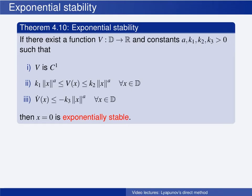Note that I have rewritten theorem 4.10 for time-invariant systems, which is what we consider for the time being, but theorem 4.10 in the book actually holds for time-varying systems, which we will get back to. When using this theorem, you must use the same norm in all three inequalities, and the same power — the same constant a — in all three inequalities. The conditions are stricter than in the Lyapunov theorem for asymptotic stability, which makes sense since exponential stability implies asymptotic stability — it is a stronger property.